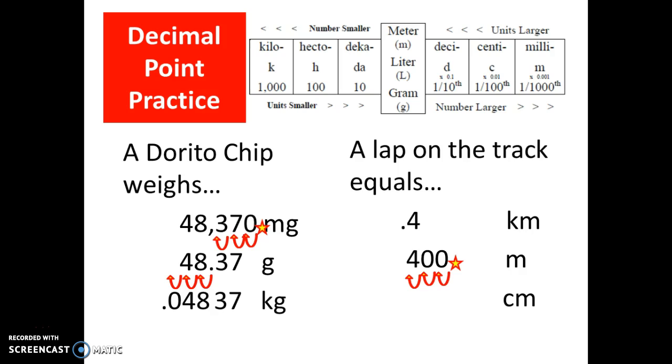If I want to go to centimeters I have two options. I can start at kilometers and five hop it all the way over to centimeters. From here five hops that would be a lot of work. Or I can start at meters and go two hops. It's the same answer either way and given that I'm a little lazy I'd rather start at meters and do two hops and fill them in with zeros. 40,000 centimeters is the same as 400 meters.